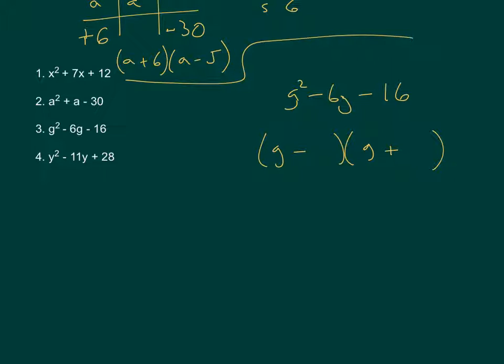So if we write out the factors of 16, 1 and 16. 1 minus 16 will give us minus 15. That doesn't work. 2 and 8. 2 minus 8 will give us minus 6. So those are the two factors that we want. So g minus 8 and g plus 2.